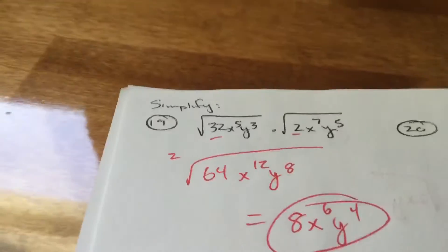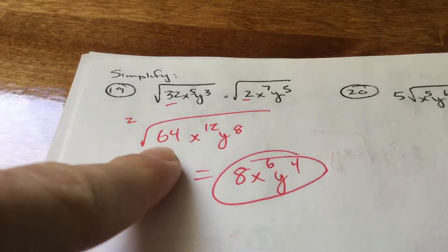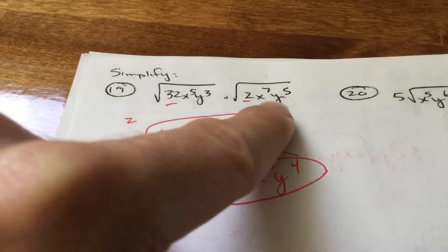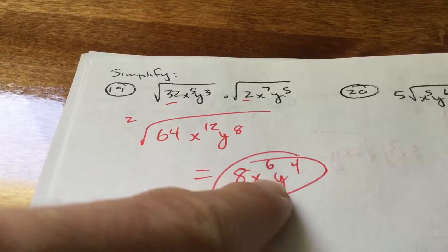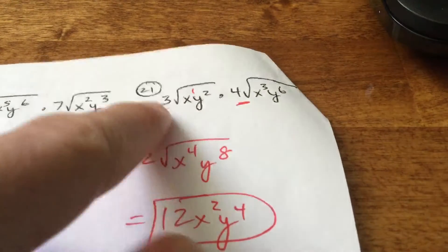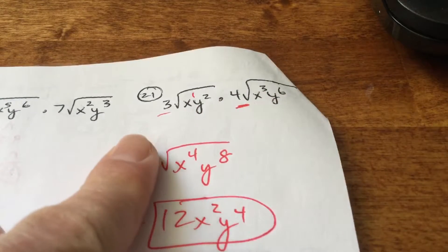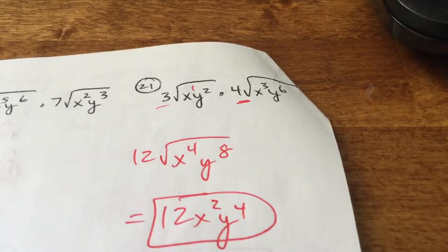This is kind of a two-day section. I'm going to do the square root of 32 times the square root of 2, which is 64. x to the 5th times x to the 7th is x to the 12th; y to the 3rd times y to the 5th is y to the 8th. Taking the second root of 64, which is 8. 2 goes into 12 six times; 2 goes into 8 four times. Nothing is left over, so everything breaks out. On number 21, we can multiply on the outside: 3 times 4 is 12, x to the 4th, y to the 8th. There's an imaginary 2 on the outside. 2 goes into 4 twice; 2 goes into 8 four times — everything breaks out.